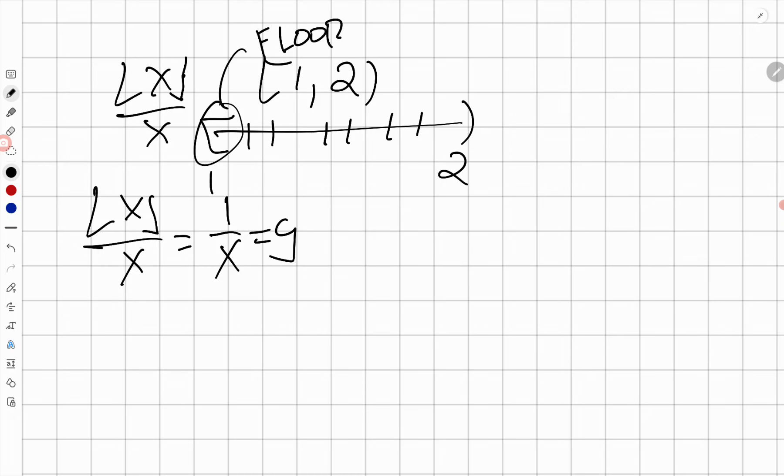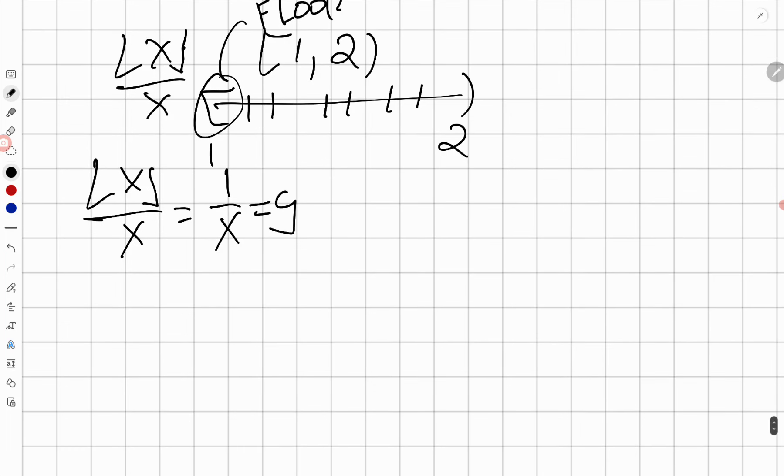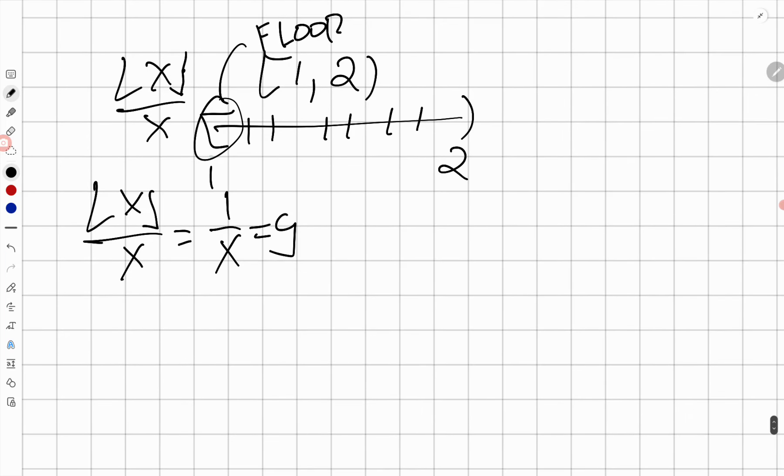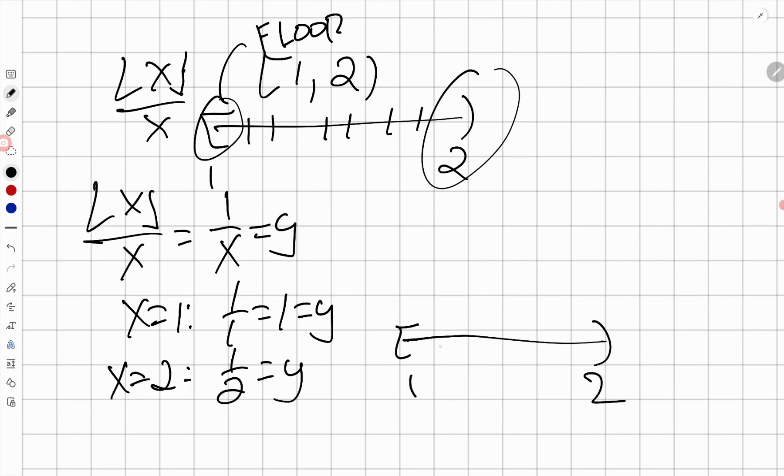So to graph that piece, remember here, one is part of the domain. So when x is the value one, we have one over one, which is one, and that's the value of y. Now, two is not part of the domain, but we can still plug it in just to see what it would be. So when x has the value two, you would have one over two. That would be your y output. So over the domain that goes from one to two, the function would look like this.